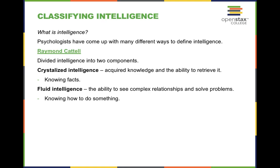Let's classify intelligence. Crystallized intelligence is like your book smarts — knowing facts, your acquired knowledge and the ability to retrieve it, such as who is the president or who was the first president. Fluid intelligence is more like your street smarts — being able to see complex relationships and solve problems, knowing how to do something.